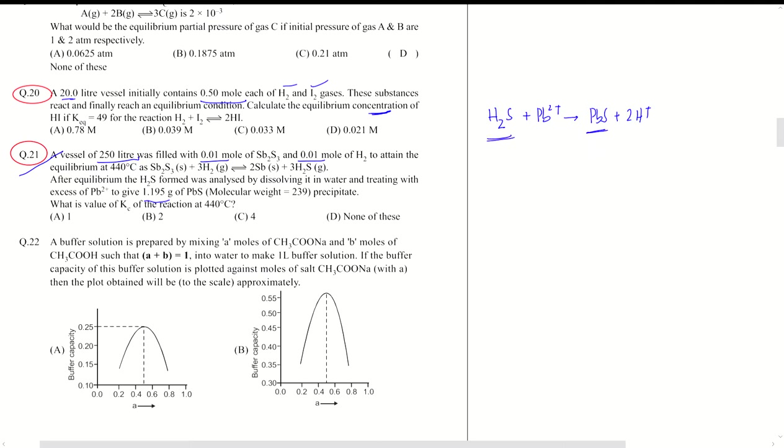The number of moles of PBS will be 1.195 divided by 239. That equals 0.005 moles. So the number of moles of H2S in this question that is formed is also 0.005.